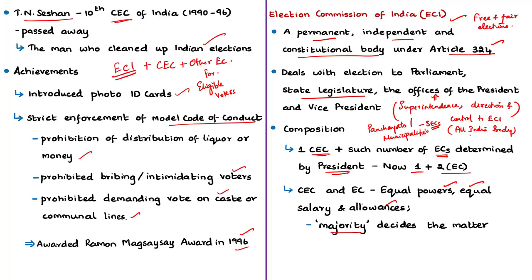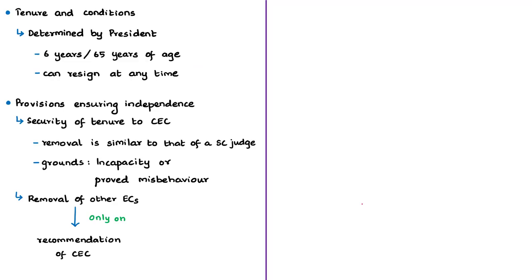When any other Election Commissioner is appointed, the Chief Election Commissioner acts as the Chairman of the Election Commission of India. At present, the Election Commission has one Chief Election Commissioner and two Election Commissioners. They have equal powers and receive equal salary, allowances and other perquisites. In case of difference of opinion, the matter is decided by majority. Article 324 also mentions that the conditions of service and tenure of the office of Election Commissioners shall be determined by the President.